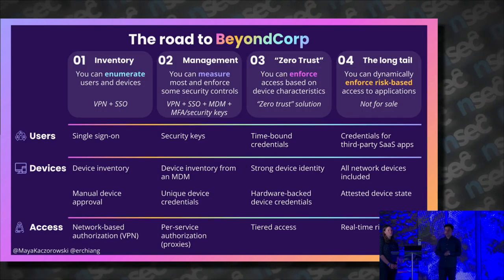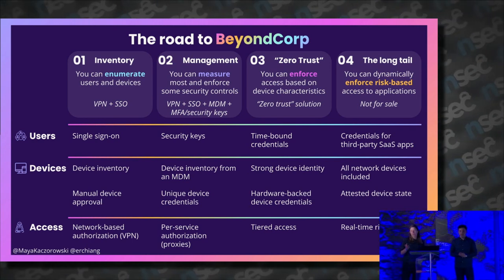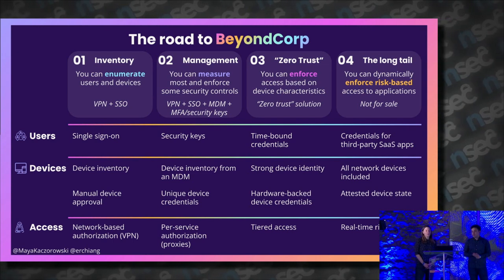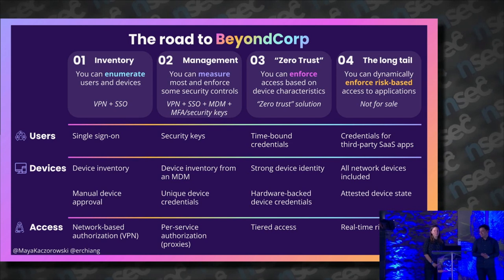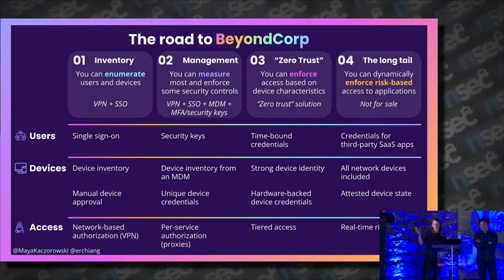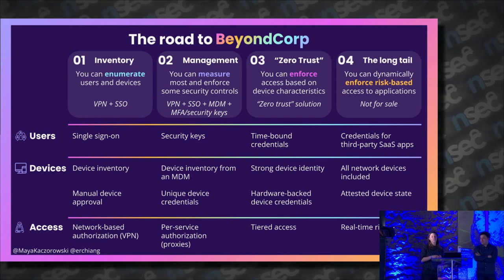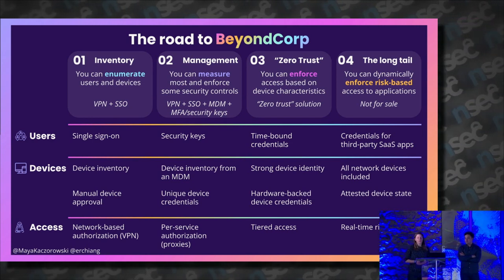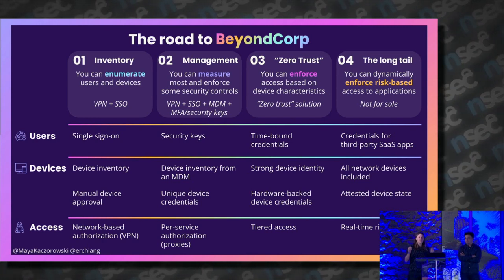So if you're trying to get to BeyondCorp or a zero trust architecture, how do you go about it and how do you know how far along you are? Eric and I have put together a roadmap — a maturity model — for how you get to zero trust. As you go from left to right, your organization has more capabilities in terms of how it secures its users, devices, and access to applications. Basically, the more you harden, the more you're doing zero trust.